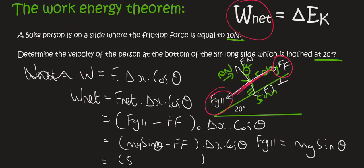And so the mass of the person is 50, gravity is 9.8, we're going to say sin of 20, then friction is 10 newtons, I'm going to say minus 10. Then the length of the slide is going to be 5 meters.